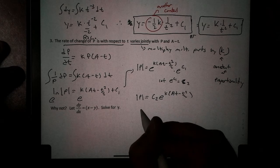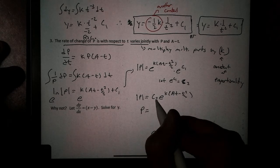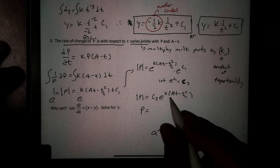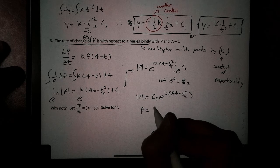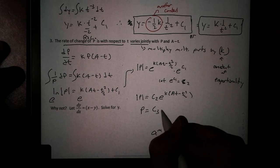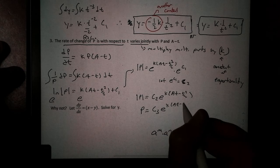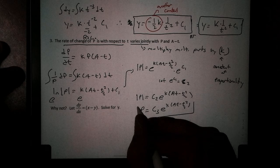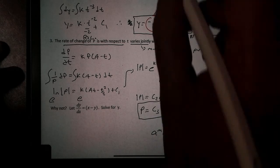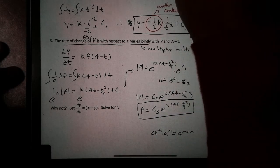Solving for P. Now, remember, we don't have to write the plus or minus, because C is a constant. It's just going to absorb it. So, if you want to, you can write this as C3 E to the KAT minus T squared over 2. And there we would have it. Remember, this is worth a lot of points right here.